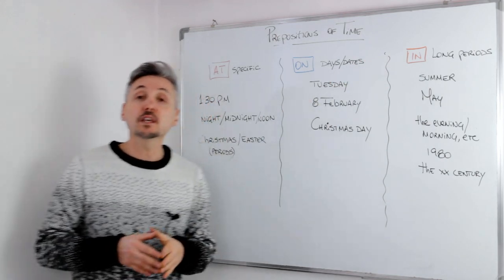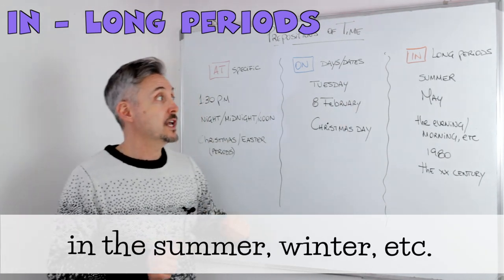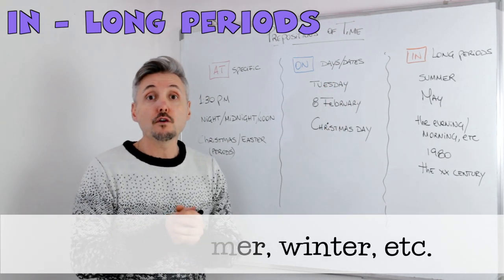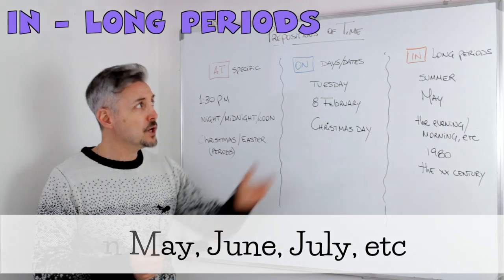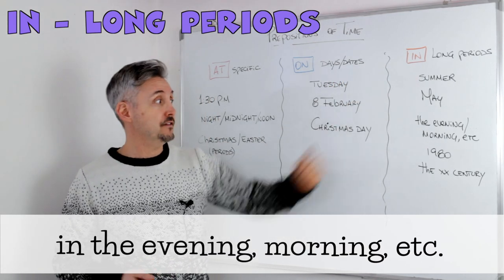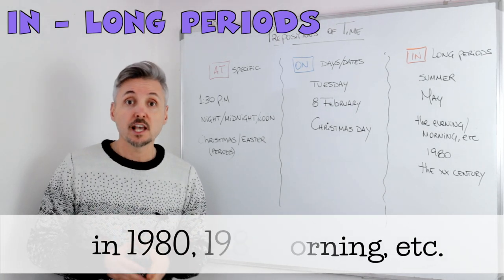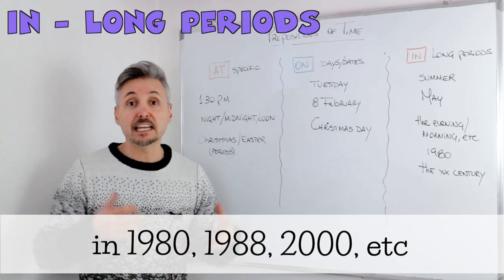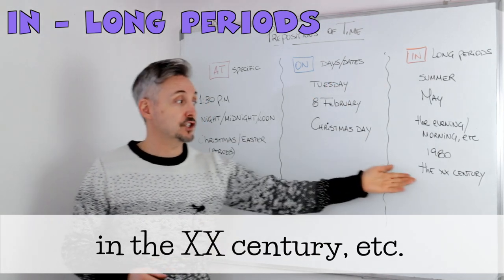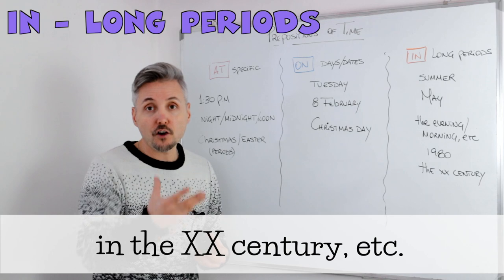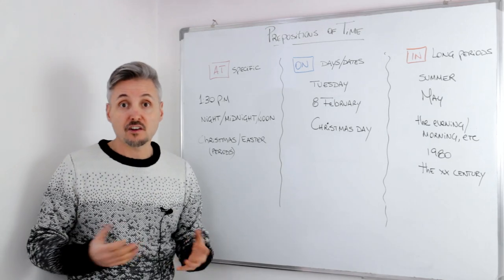Then in, we use in for long periods, so for seasons, in the summer. Then we also use in for months, in May, in June, in July, etc. We also use in to say in the evening, in the morning, etc. Then we use in for years, in 1980, in 1988, in 2000. Then we also use in for centuries, so in the 21st century, in the 20th century, etc.